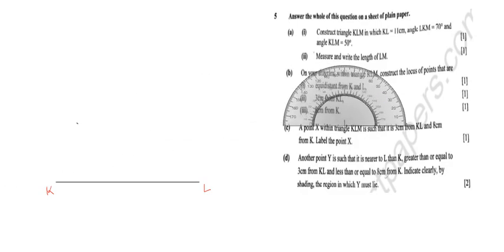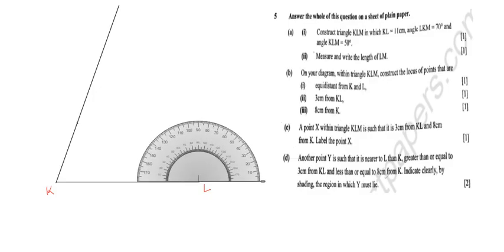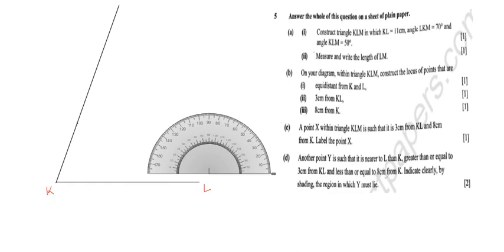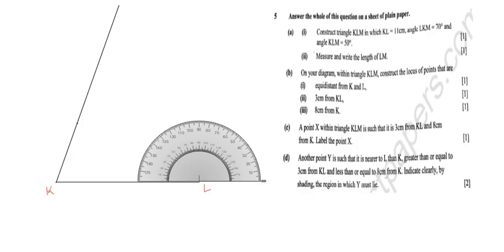I can set the protractor aside and draw a line from point K passing through the mark I placed for 70 degrees. Then we are told angle KLM is 50 degrees — from K to L to M — so the angle at L is 50 degrees. 50 degrees is equivalent to 130 on the opposite protractor scale, so it's somewhere there.